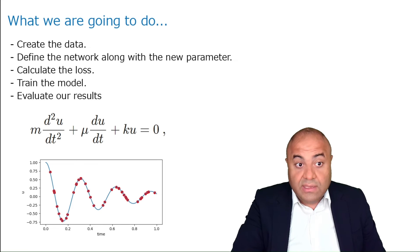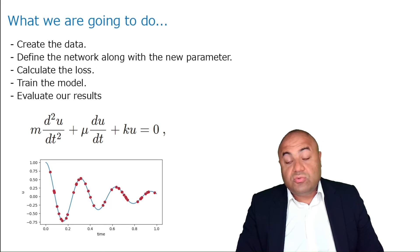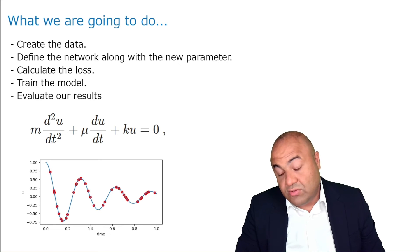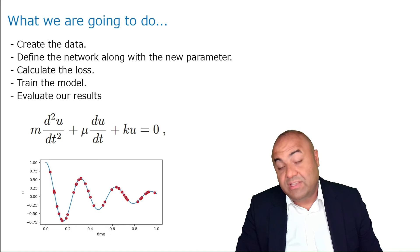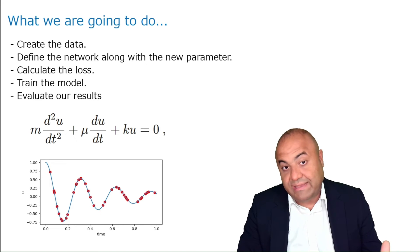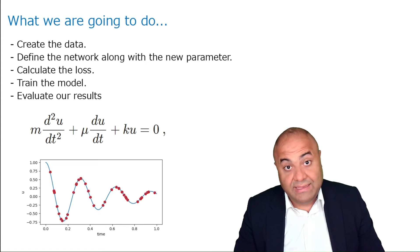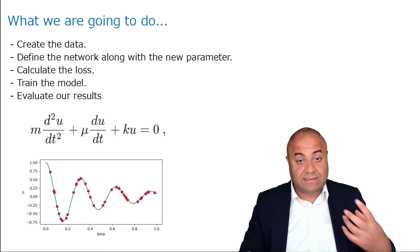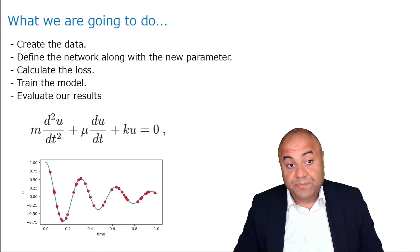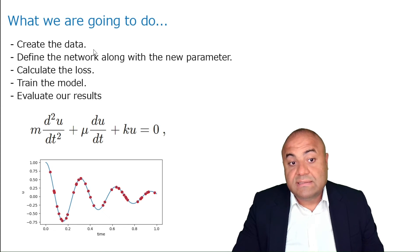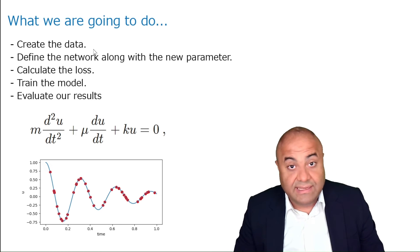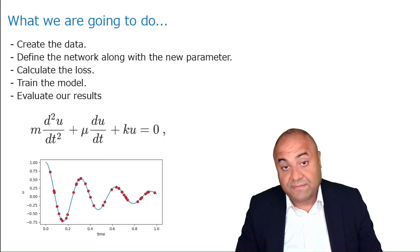To solve an inverse problem we need data. PINNs doesn't really need specific data — we generate virtual collocation points — but for inverse PINNs we need real data: pairs of time t and corresponding position x at those specific times. The first thing we need is data, and in our case we are going to generate this data for a specific known value of mu.